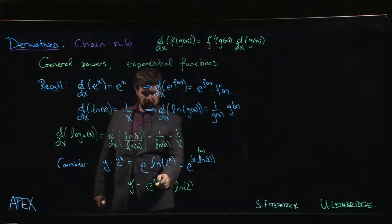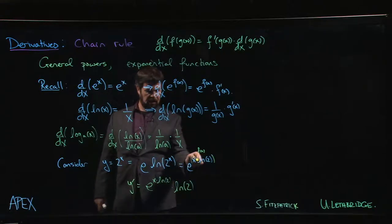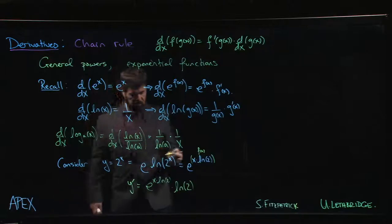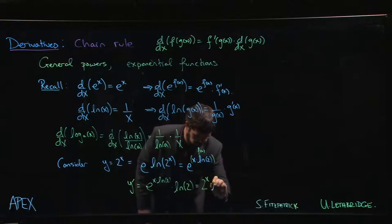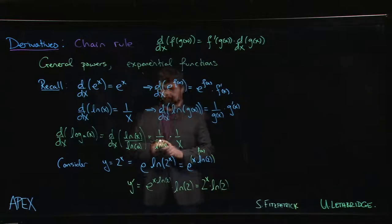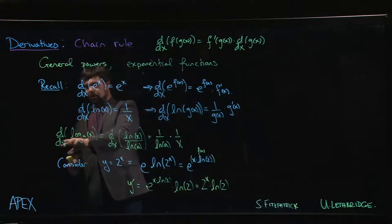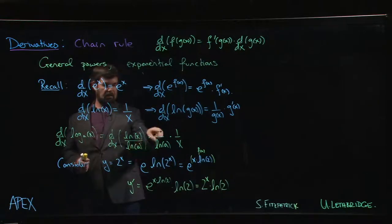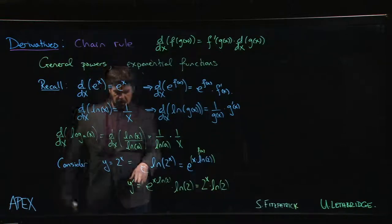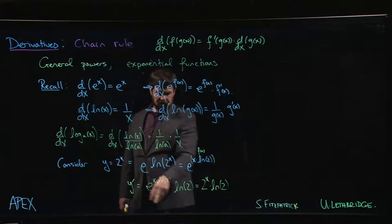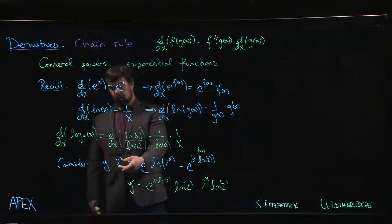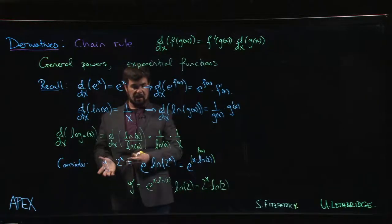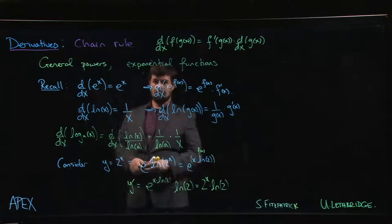But one last thing we see here that this e to the x times the natural log of 2, that was just 2 to the x. So what we get is 2 to the x multiplied by the natural log of 2. So when you take the derivative of a log to some other base, you divide by the natural log of that base. When you take the derivative of an exponential with some other base, you multiply by the natural log of that base. And you could easily replace 2 by any other base a here, you'll have the same result, a to the x times the natural log of a.